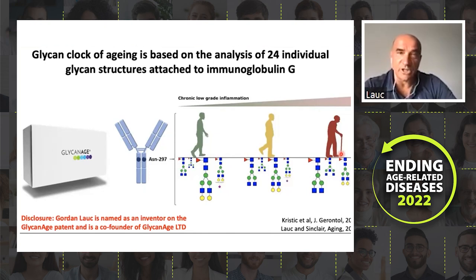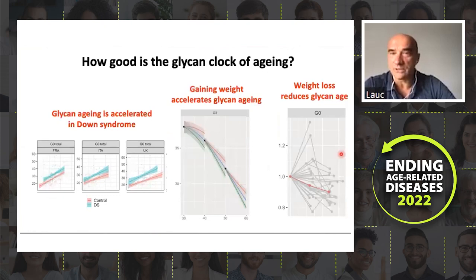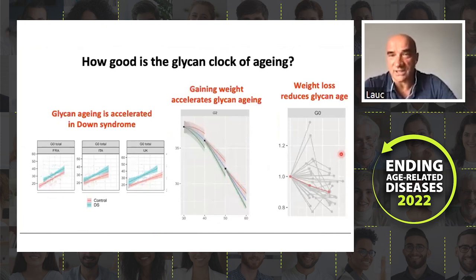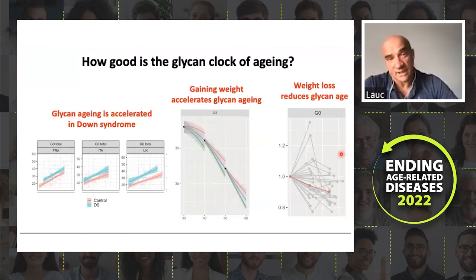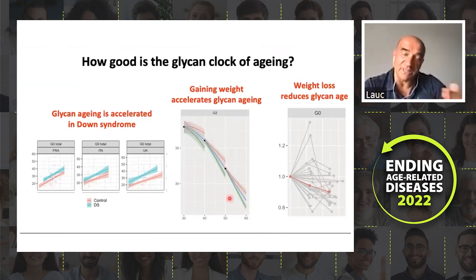The question often heard is: how good is the glycan clock of aging? The glycan age clock ticks all the boxes mentioned earlier. It does show accelerated aging in Down syndrome — interestingly, the acceleration happens very early and then the pace continues at the same rate, with a very rapid acceleration in young age. We also know that gaining weight is associated with accelerated glycan aging.